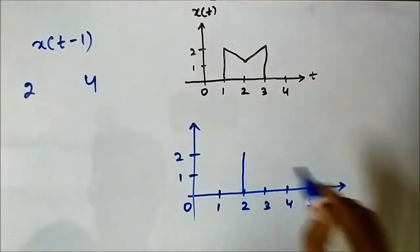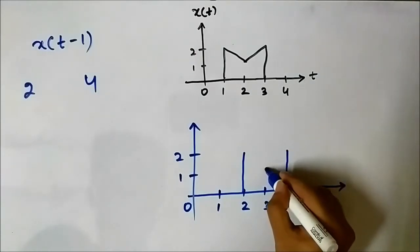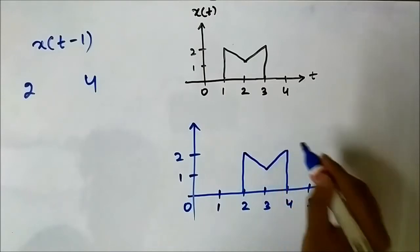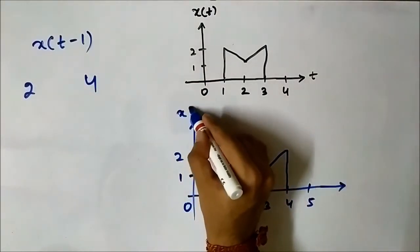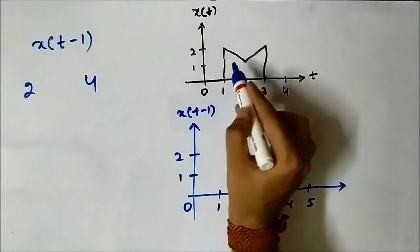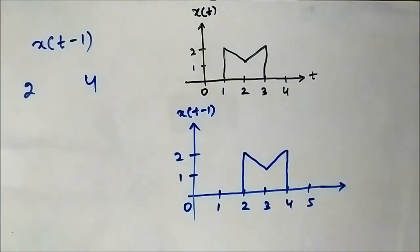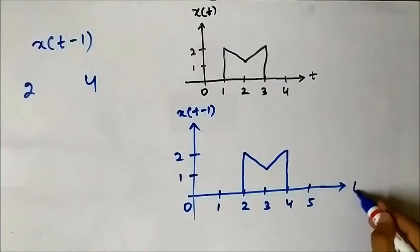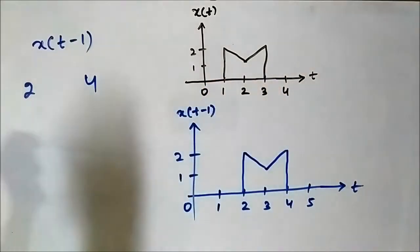Here the new starting point and the new ending point give us the shifted signal XT minus 1. It has shifted to the right by one unit. This is the time-shifting operation performed on this signal in both directions.